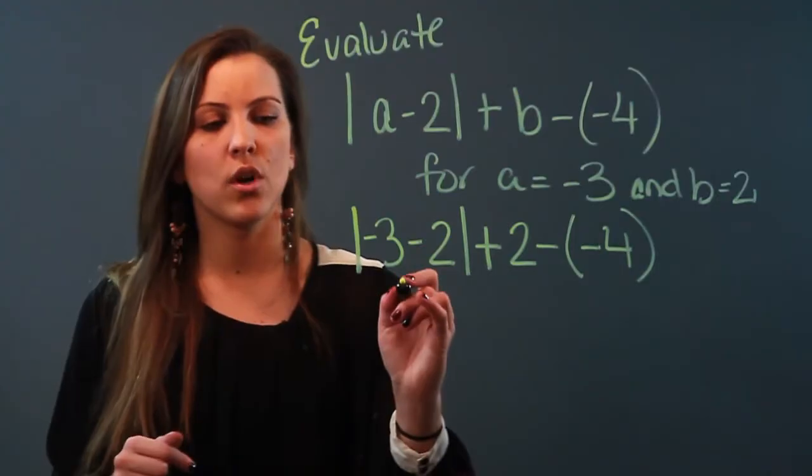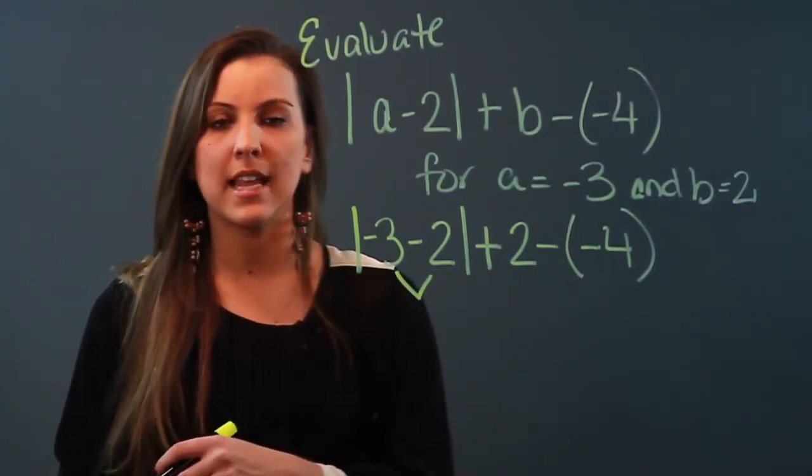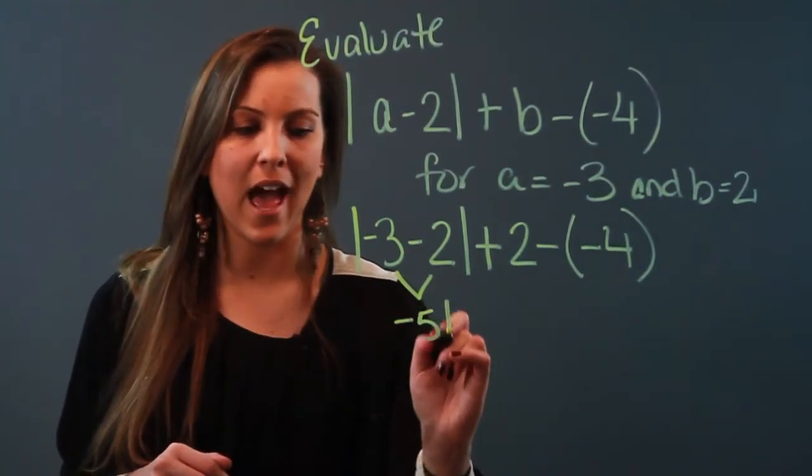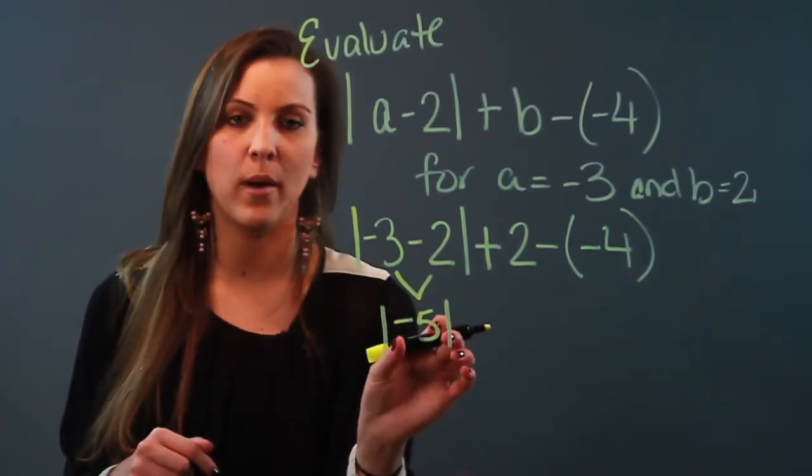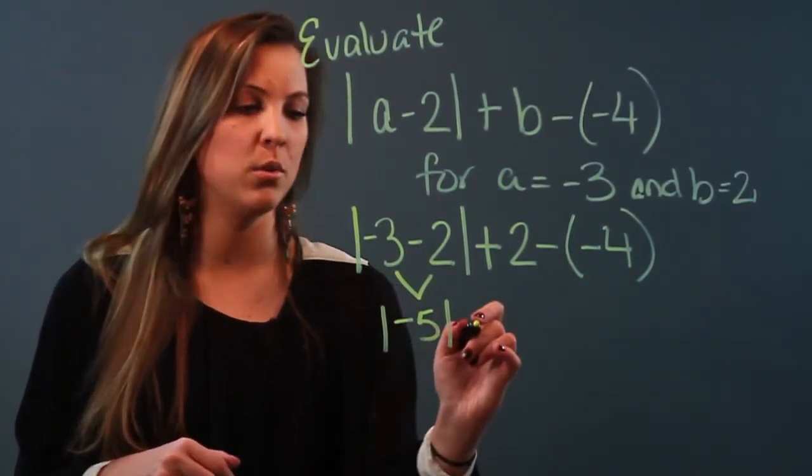Do what's inside the absolute value bars: -3 - 2 is -5. I haven't taken the absolute value yet, so I have to keep the bars. Plus 2 minus -4, bring it down to stay organized.